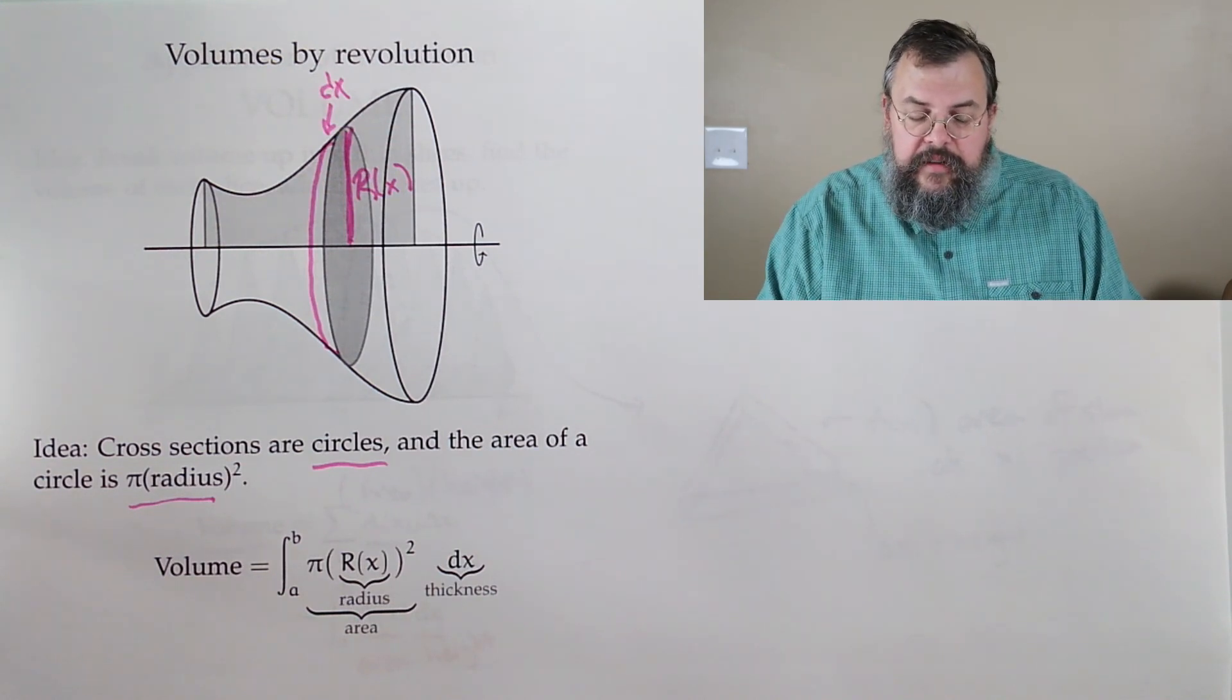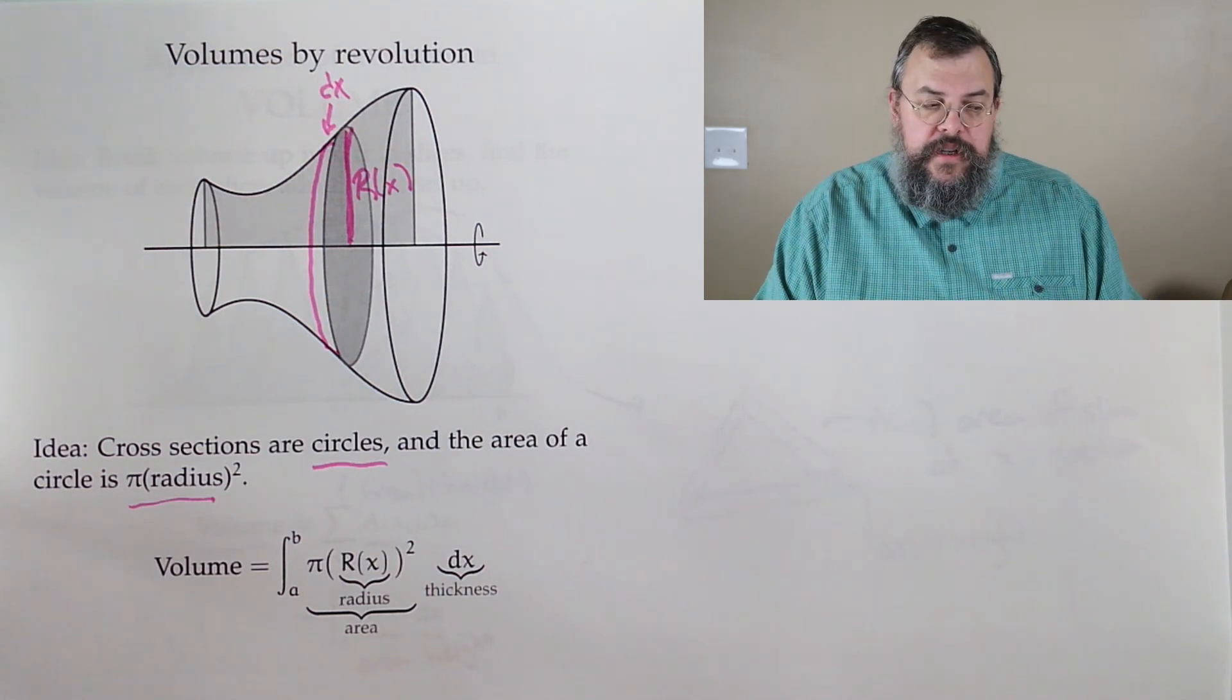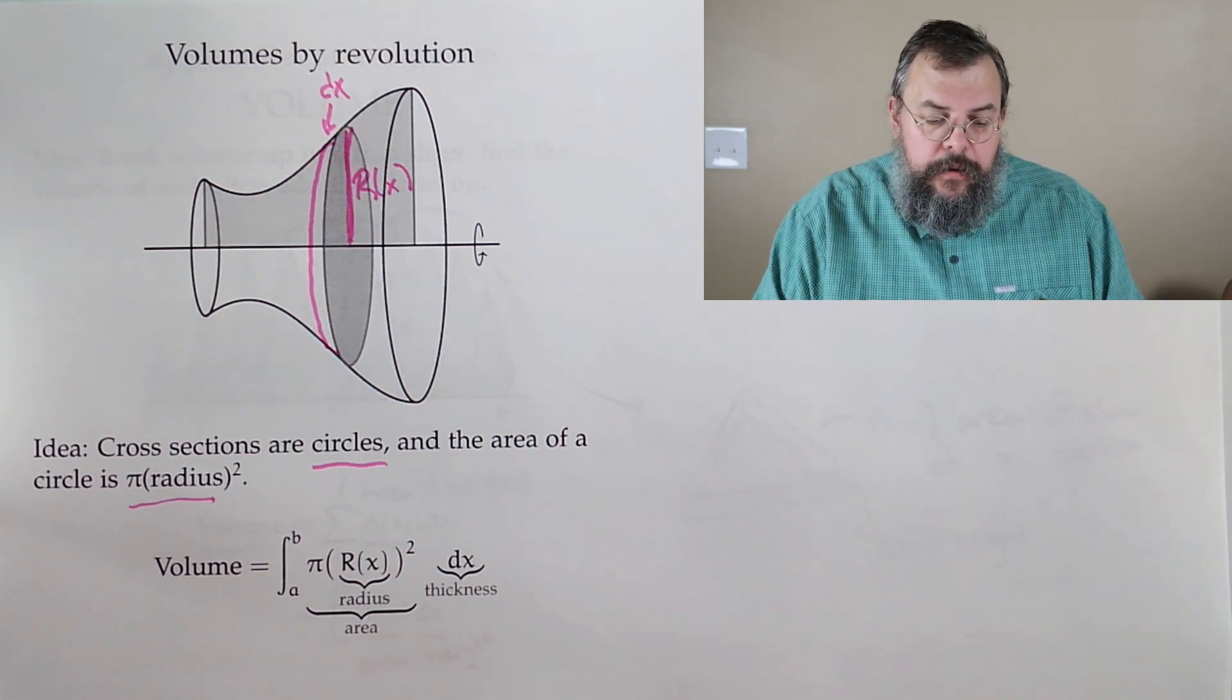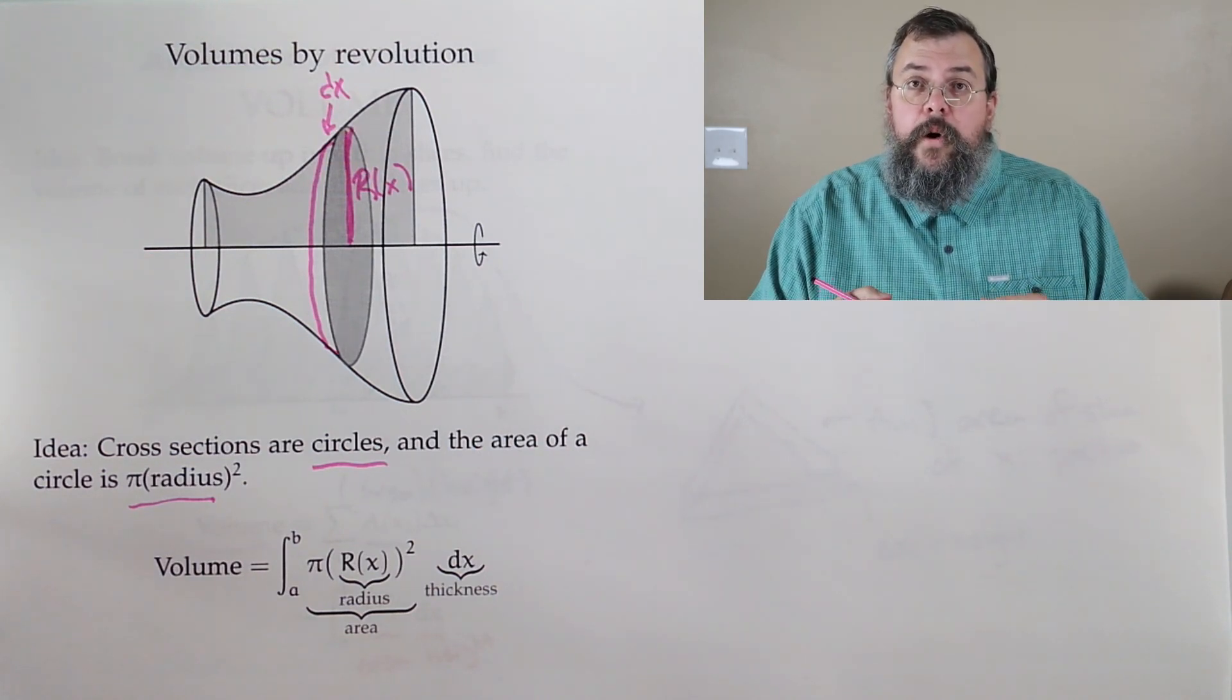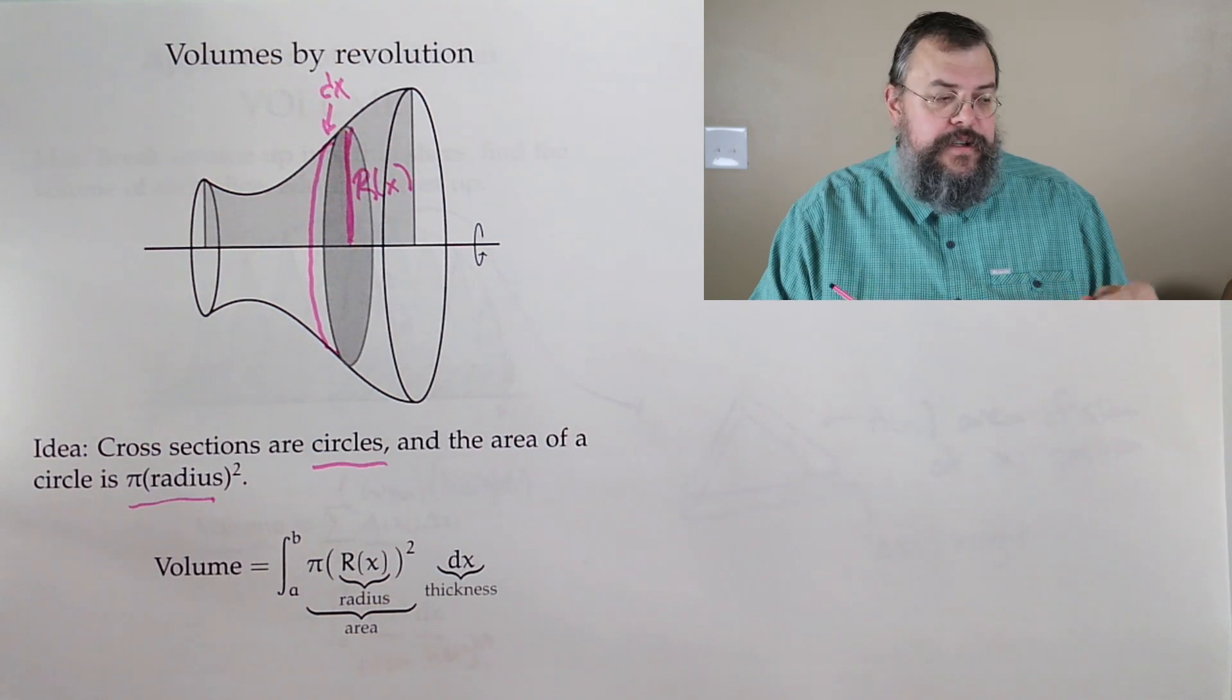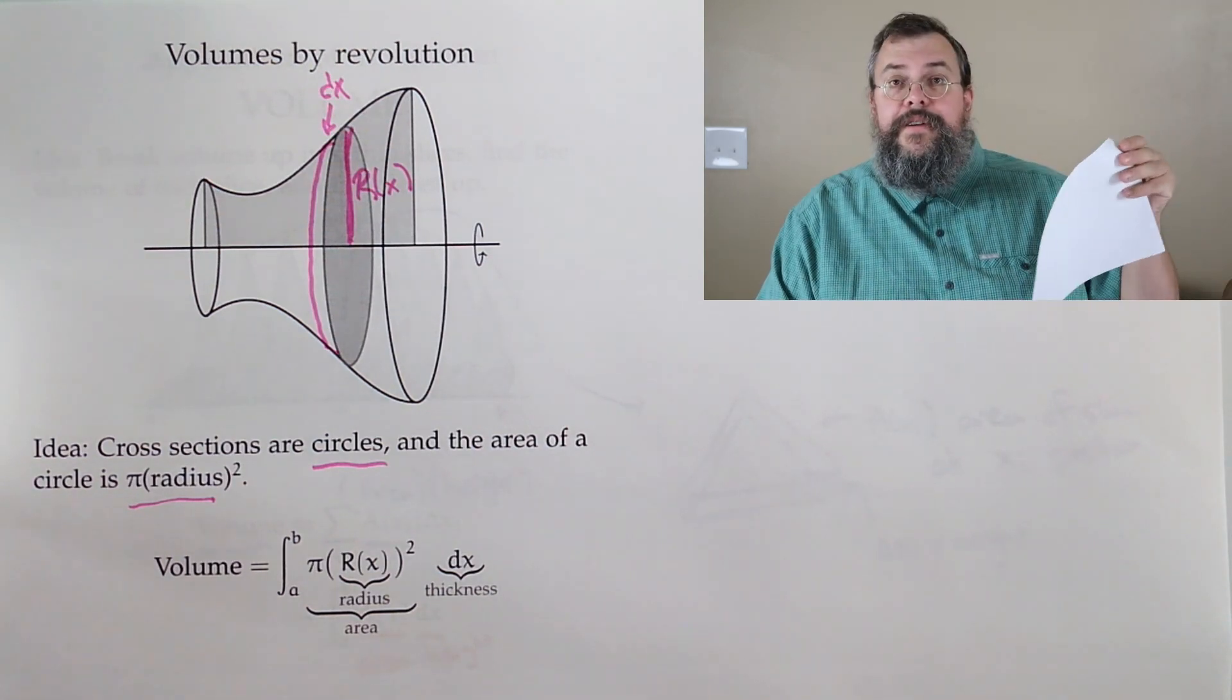So that's one way to find a volume whenever you have a volume of revolution. Now you might want to say, what if there's a hole in the middle? In other words, it's a holy shape, something where the inside is missing. We can still do that.